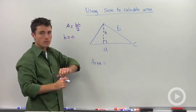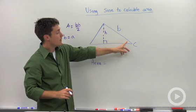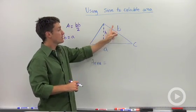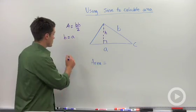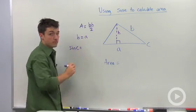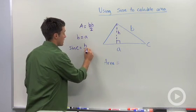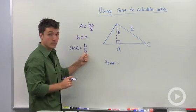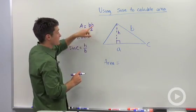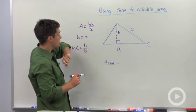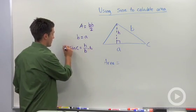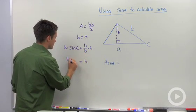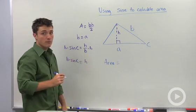We're going to have to use trigonometry to find our height. Looking at angle C — the only one we know — the opposite over hypotenuse gives us sine. So sine of angle C equals our height divided by the hypotenuse of this right triangle, which is B. Solving for H by multiplying both sides by B, we get H equals B times the sine of angle C.